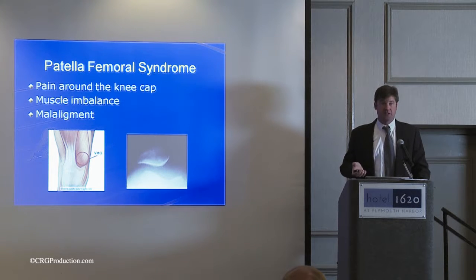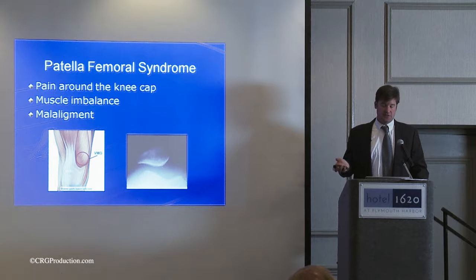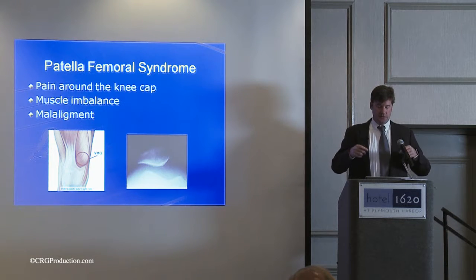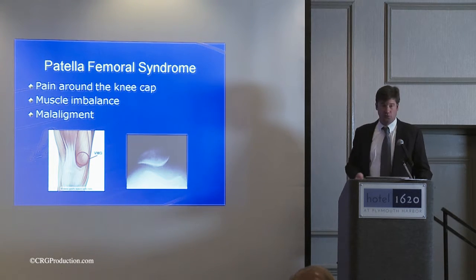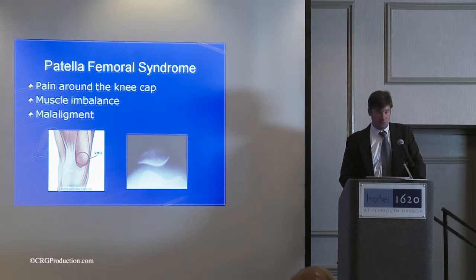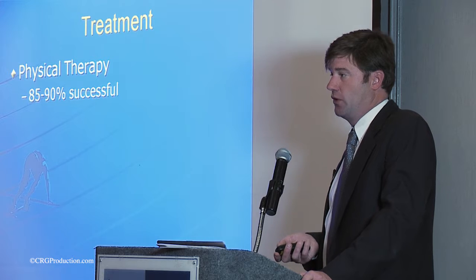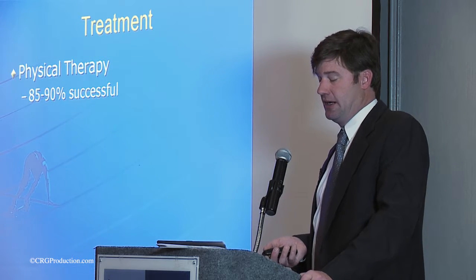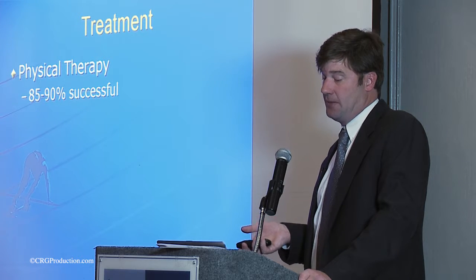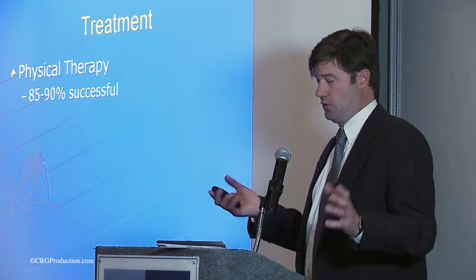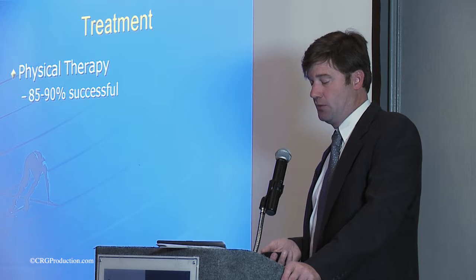Very common in all age groups, but particularly in young female athletes, because they have more of what we call a Q angle — the hips tend to be a little wider and the knees tend to come in a little bit, so the kneecap has more of an angle to navigate. The muscle atrophy and hamstring tightness presents as swelling and pain around the kneecap, particularly when loading the joint going up and down stairs or getting up from a seated position. It can also present as pain behind the knee or diffuse generalized knee pain.